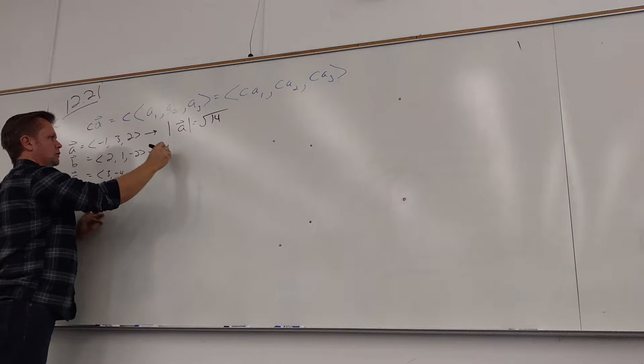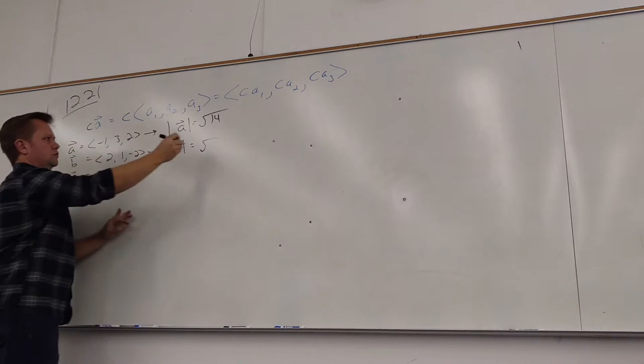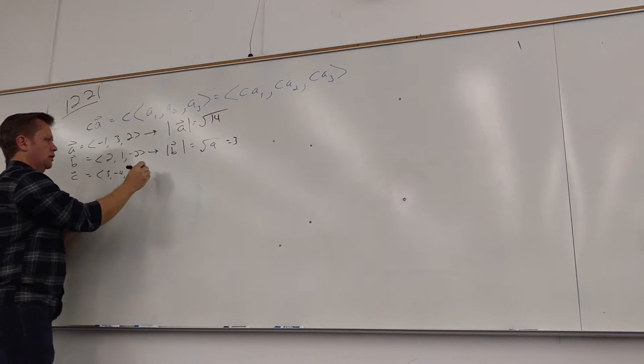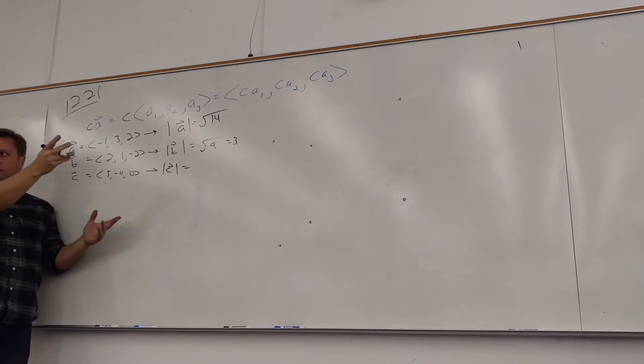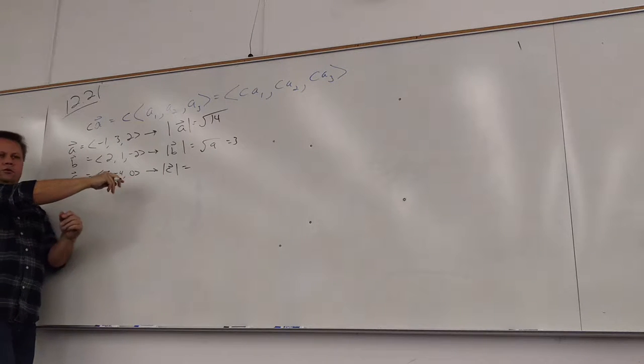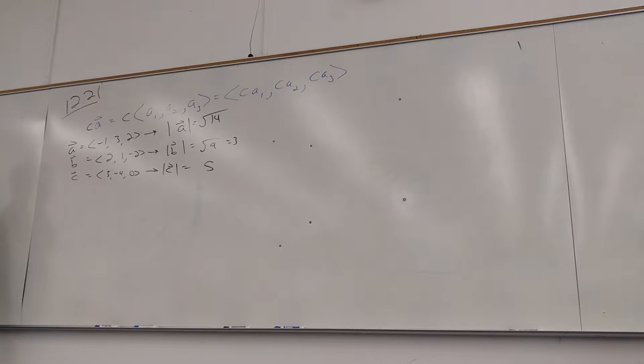So the length of A is square root of 14. The length of B comes out to be nice, right? Square root of 9, 3. And the length of C also comes out to be nice. 3, 4, 5 triangles, right? Because they made this 0. So this will be 5 eventually. Cool. 9, 16, 25, square root of 25, 5. Cool. I like it.